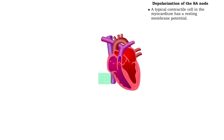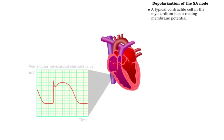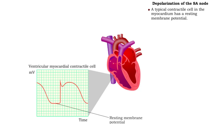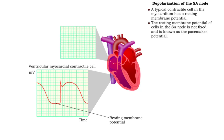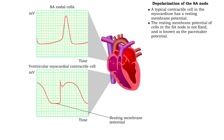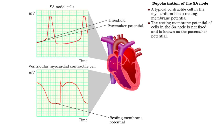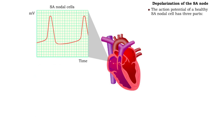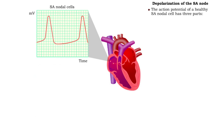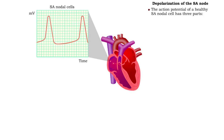A typical contractile cell in the myocardium has a resting membrane potential. Cells in the SA node, however, do not have a fixed resting membrane potential. Instead, the resting membrane potential of an SA node cell is called a pacemaker potential. Each healthy heartbeat starts with a pacemaker potential, in which the auto-rhythmic cells of the quick-firing SA node spontaneously excite themselves and neighboring cells.